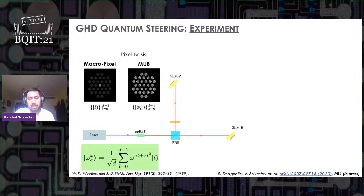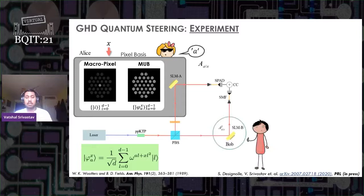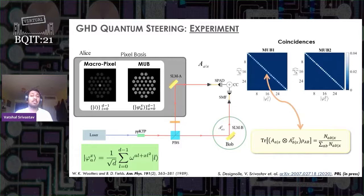We model MUB projectors from the prescription given by Wootters and Fields. Now SLM couples any selected mode of incident photons to single mode fibers that are connected to single photon detectors from where we get our coincidences between Alice and Bob. The idea here is the same where Alice performs her side of measurement by giving some input x and announces her outcome a, and then Bob performs his side of measurement, and from the coincidences we'll get the value of the term that is required to evaluate the steering inequality.